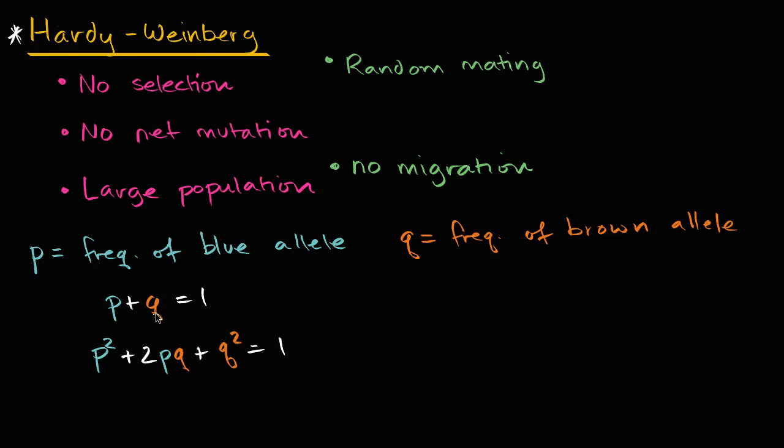And if you square both sides of this, you would get this expression. p² is the probability of being homozygous for the blue. This is the probability of having two alleles for the brown. And then right here in the middle, this is the probability of being a heterozygote. And why is that? Because you could get a blue from your mom and a brown from your dad, or a blue from your dad and a brown from your mom. So there's two ways to get that p-q combination.